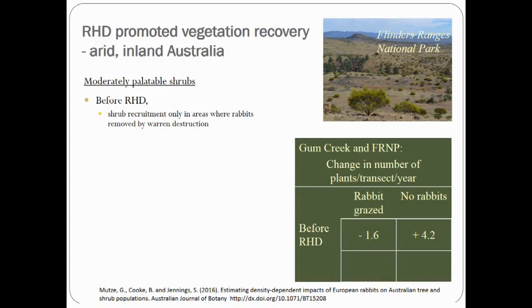The effect of rabbits on preventing regeneration of perennial vegetation is well recognised — they take out seedlings of young shrubs and trees. In our study site in the Flinders Ranges before RHD, we were recording shrub recruitment only in those areas where we had done widespread warren ripping programs, despite the increase in kangaroo and sheep grazing in those areas where we did the rabbit control.